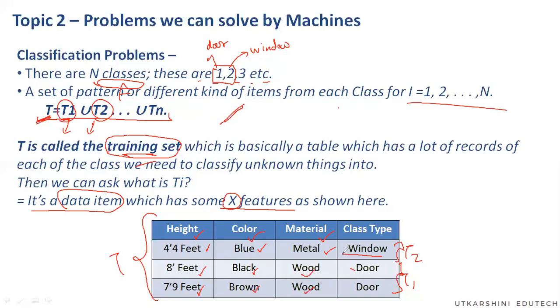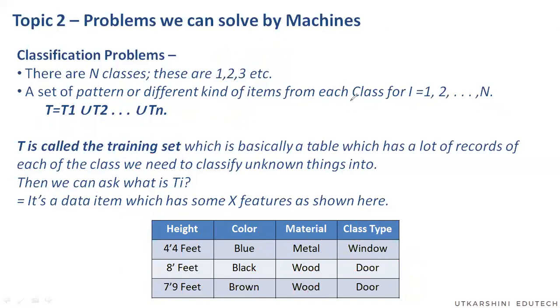So this particular thing tells me the label. Whenever I say class type, you should be knowing this is a label. So this particular thing is a window and these two are doors. So that much should be clear by now. Let's move to the next thing.